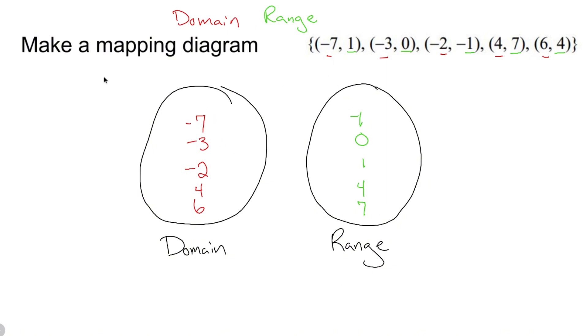Negative seven. Now what we're going to do is we need to map these. In other words, what's happening with negative seven? Well, negative seven is going to one. So I'm going to take negative seven and put an arrow to regular one.